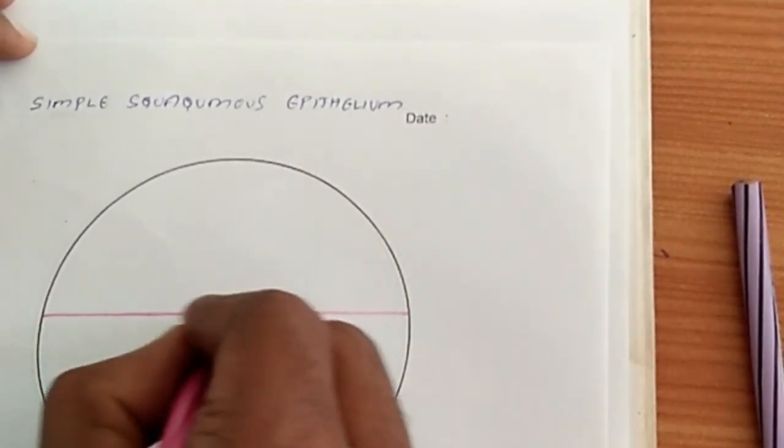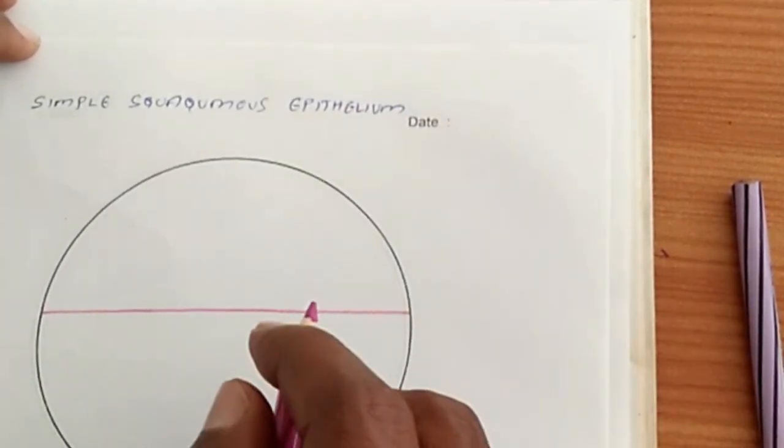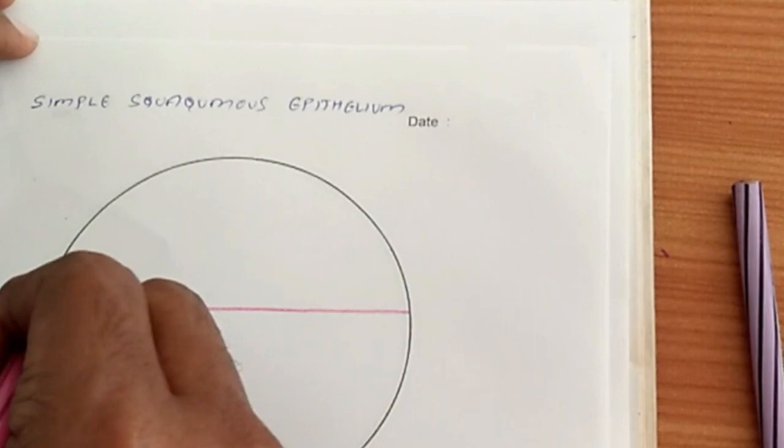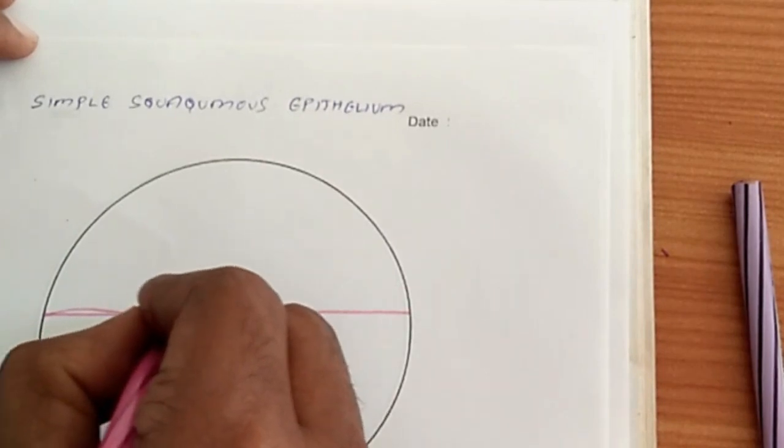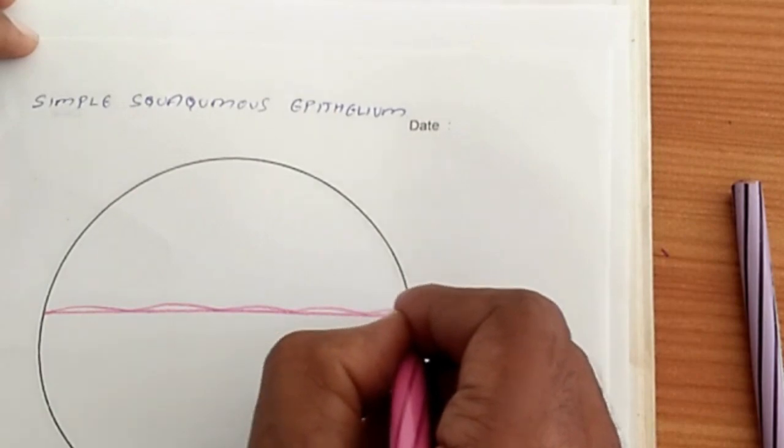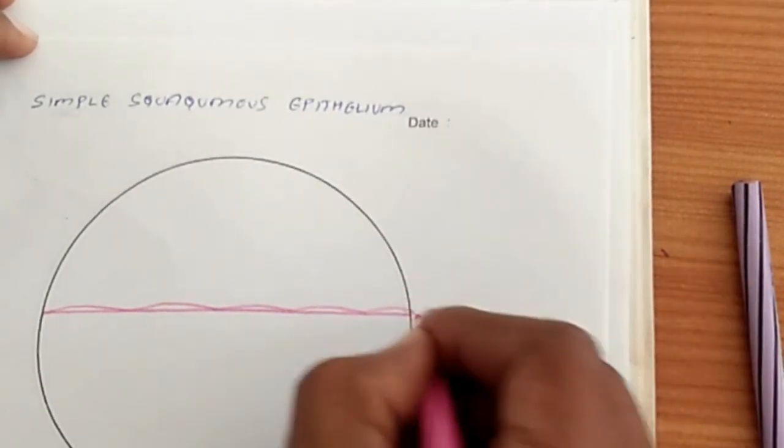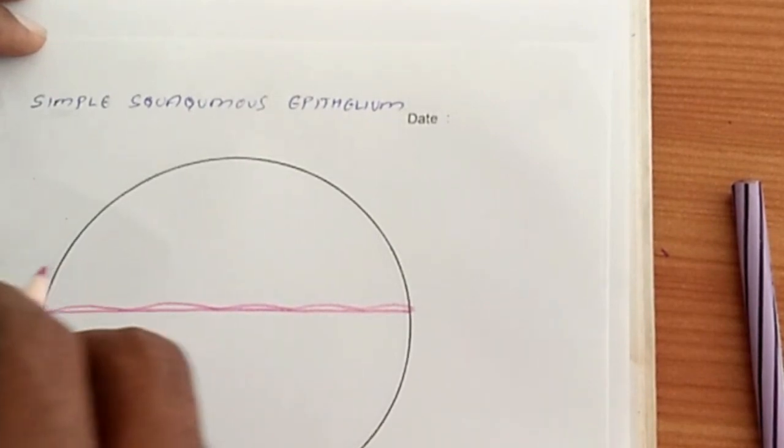I am just drawing it a little thicker. Over this we have to draw the cell. So I am going to draw the cell one by one. They are flat cells. So this is how it looks. The cell boundary is drawn.